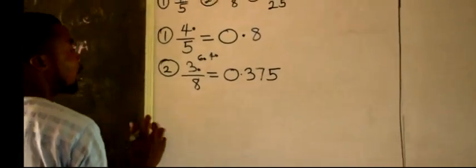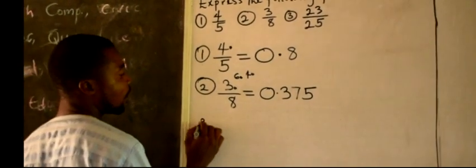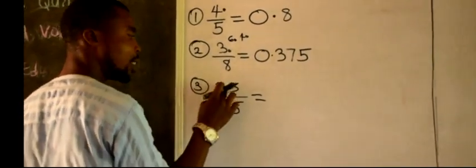That is your final answer. Number 3. 23 divided by 25. 25 will go in 23. It cannot go. That is a 0 point. Then, it becomes 230.